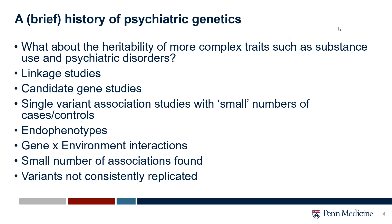For a while, endophenotypes were popular — the idea that instead of looking at actual case status, you'd look at a feature of that status. For instance, instead of looking at people with cardiovascular disease, you might look at HDL cholesterol, something closer to the biology. We've also tried gene-environment interactions, but overall a small number of associations have been found and variants have not been consistently replicated.